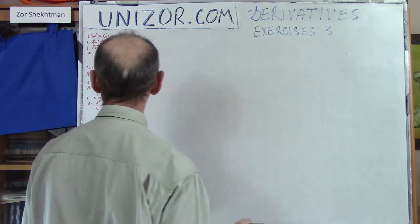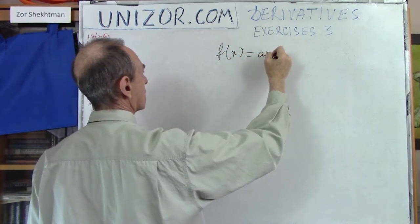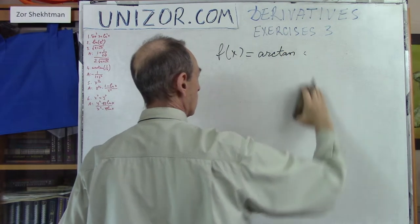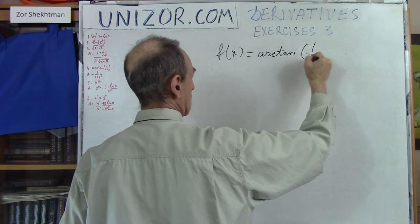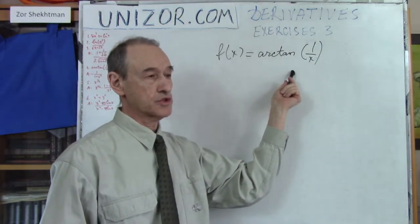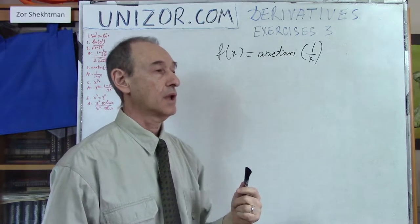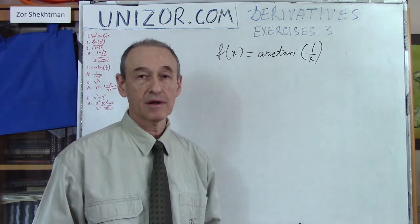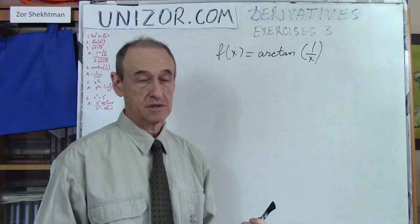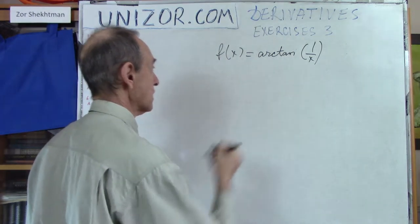The next exercise requires a bit more work. Our function is arctan(1/x). We have arctan as the outer function and 1/x as the inner function. To be honest, I don't remember by heart the derivative of arctan, so I need to derive it first before using it here.